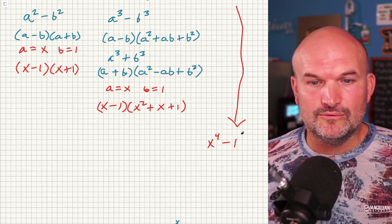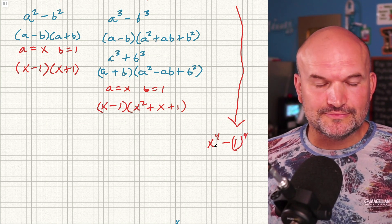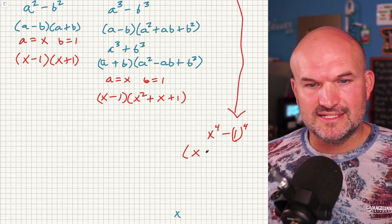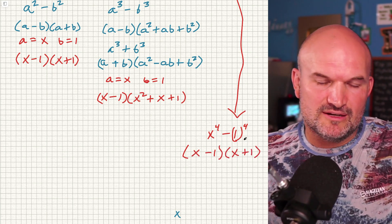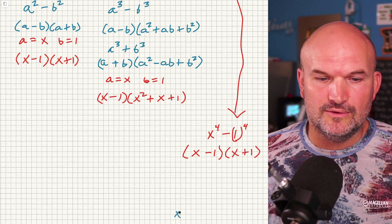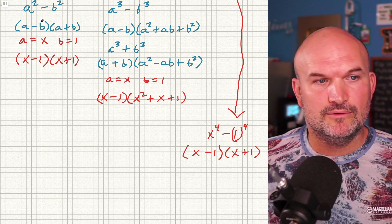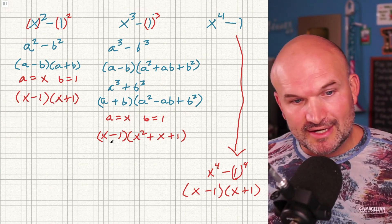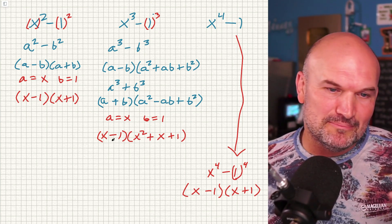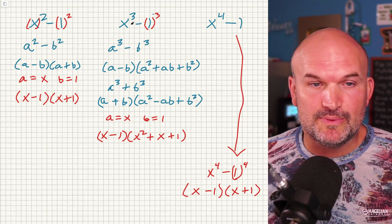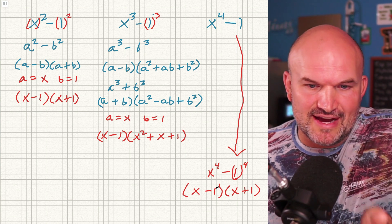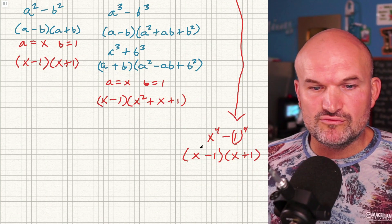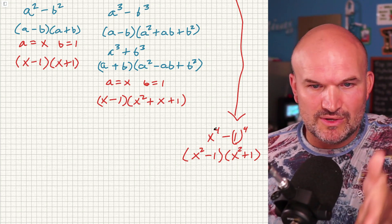We can rewrite x to the fourth minus 1 as x squared squared minus 1 squared squared. If I think about this as a difference of two squares, I'd get x squared minus 1 times x squared plus 1. We can always check our answer by multiplying back out — x squared times x squared gives x to the fourth, and negative 1 times positive 1 gives negative 1, with middle terms canceling to zero. The key is x times x doesn't give x to the fourth — I need to raise the powers to x squared times x squared.